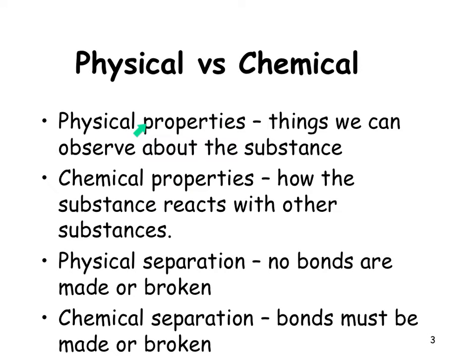Other physical properties are things like boiling point and melting point — we can observe those things. Chemical properties are how substances react with another substance, so there has to be another substance involved for chemical change. Physical separation means no bonds are made or broken. One of our classic physical separations is ice going to water going to steam.